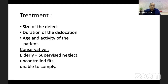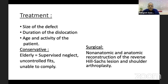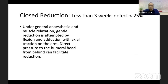Treatment of posterior dislocation depends on the size of the defect, duration of dislocation, and age and activity of the patient. Conservative treatment has a role in elderly low-demand patients who can undergo supervised neglect, those with uncontrolled fits, and those who cannot participate in rehabilitation or physiotherapy. Surgical treatment is based on non-anatomic and anatomic reconstruction of the reverse Hill-Sachs lesion and/or shoulder arthroplasty.